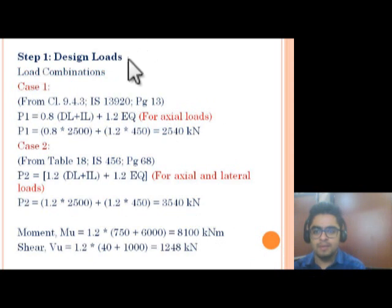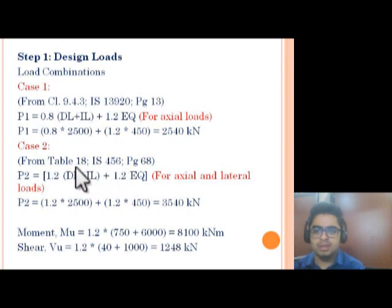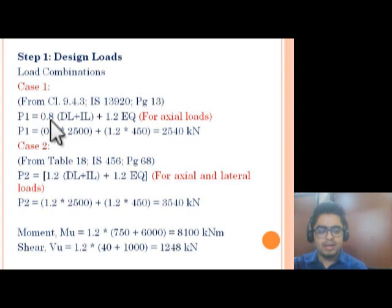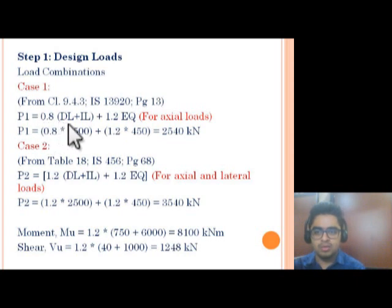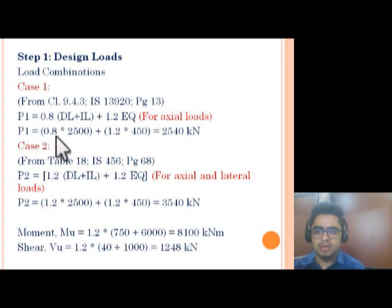Step 1: Design load. We will consider load combinations based on two codes — IS 13920 clause 9.4.3 and IS 456 Table 18. From clause 9.4.3: if the gravity load adds to the strength of the wall, its load factor shall be taken as 0.8. So for gravity load, the partial safety factor is 0.8, and for earthquake load it is 1.2. This gives P1 = 0.8 × 2500 + 1.2 × 450 = 2540 kN.